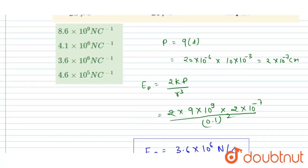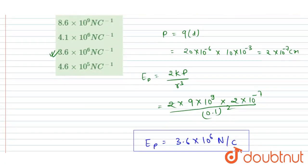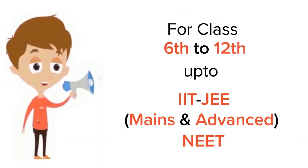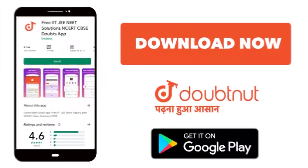So now you can check for the correct option here. So here you could see C is the correct option, 3.6 into 10 to the power 6 newton per coulomb. Thank you. For class 6 to 12, IIT, JEE and NEET level, trusted by more than 5 crore students. Download Doubtnet app today.